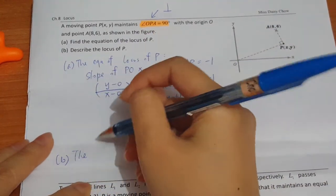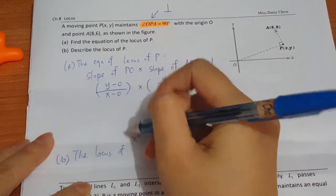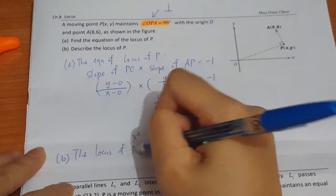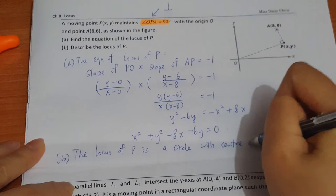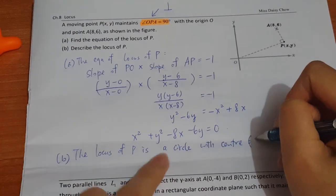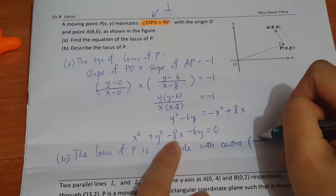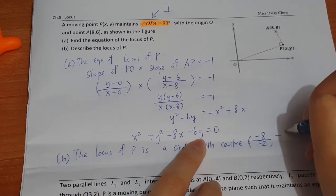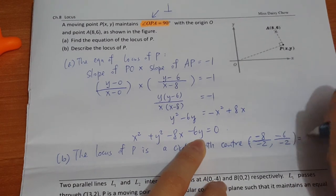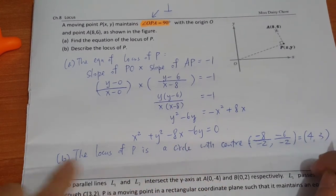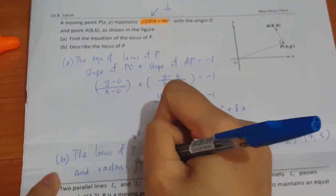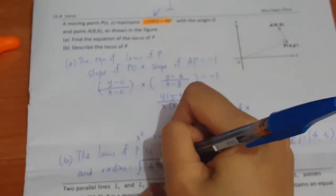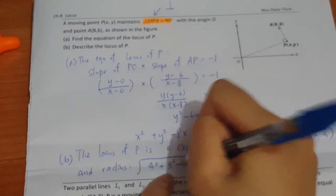So I need to calculate. The locus of P is a circle with center—I hope you remember how to calculate it—would be D over negative 2, and then E over negative 2, which will give you (4, 3). And also the radius.